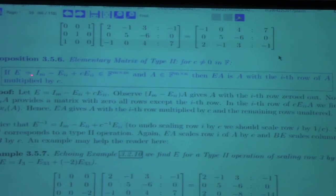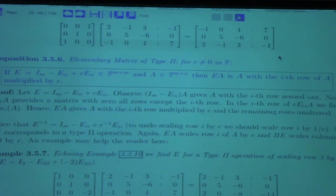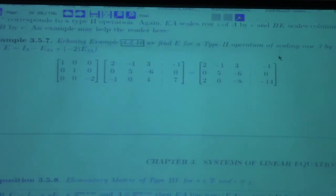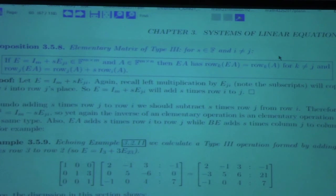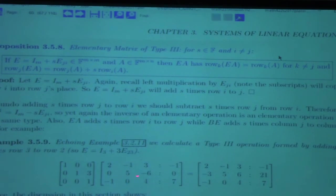Likewise, I minus E_{II} plus C times E_{II} gives row scaling — it removes the ith row and puts it back with a multiple of C. And to add a row, you do I_M plus S times E_{JI}, which adds S times the Jth row and puts it in the ith one — that's row addition, type three. For example, here we're adding three times row three to row two.